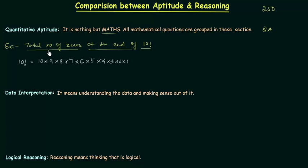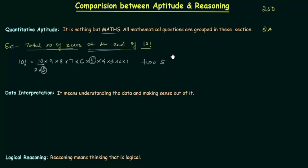Whenever you have to find out the total number of zeros at the end, you have to look for 5. I can write 10 as 2 multiplied by 5, so I have one 5 here and another 5 from the standalone 5. In total I have two 5's, and two 5's will give us two zeros at the end, because whenever you multiply 5 with any even number, you have 0 at the ones place. So we get two zeros at the end of 10 factorial.